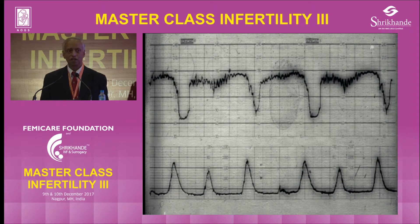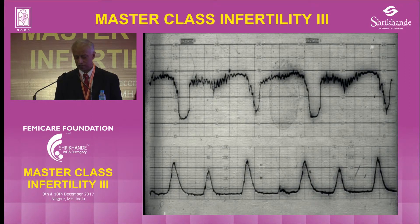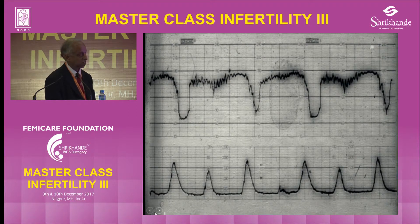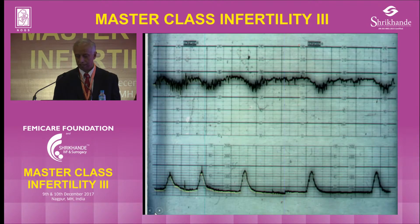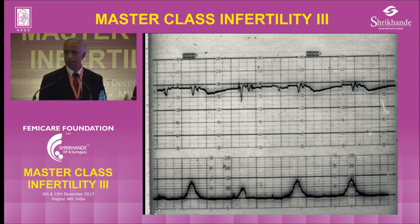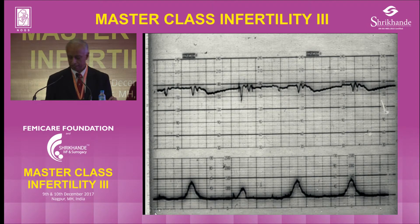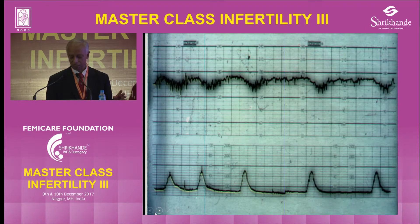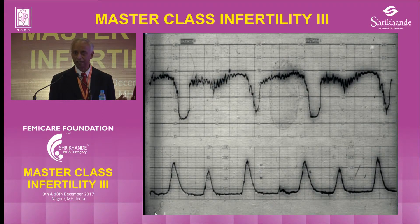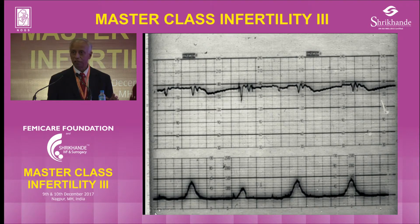The three slides I am going to show you have the same baseline rate, no accelerations, but different types of deceleration. This one, as you can see, is 170, and if you draw a line from the beginning of the contraction, it decelerates immediately — these are atypical variables. The next one again has late deceleration, the variability is going; and this one, the variability is completely gone. So this is the bad trace out of the three, because variability is the last thing to go — the autonomic nervous system. So although the decelerations appear worse, what really matters is the variability with the decelerations.